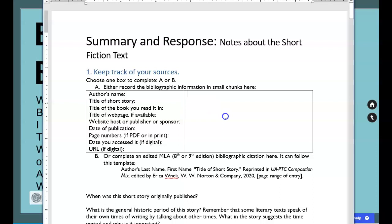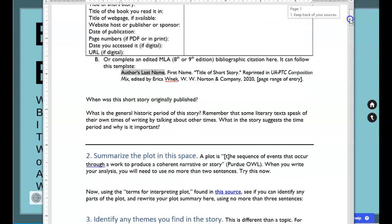You're going to record what the name of your fiction was or you could go ahead and pop in your bibliographic citation. On the first page I have a template for you so you place your author's last name, comma first name, quotation, the title of the short story you've chosen and then you do reprinted in UAPTC composition mix etc and you place your page range of entry. If you get it from another source you're going to have a completely and totally different bibliographic citation but you should still be choosing one of those five pieces of literature.